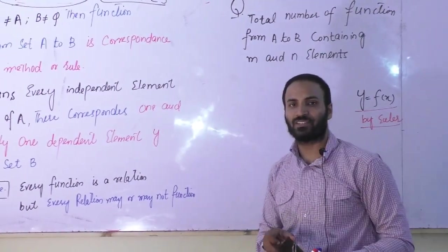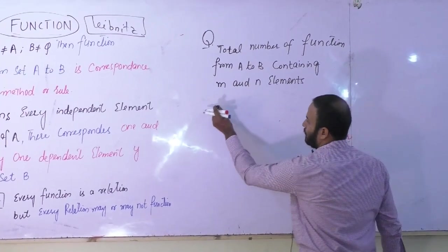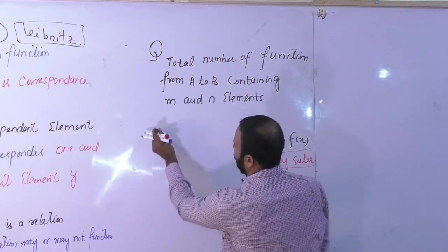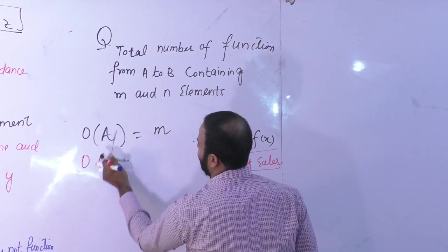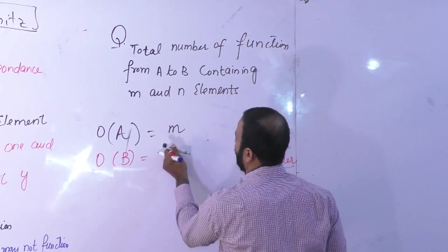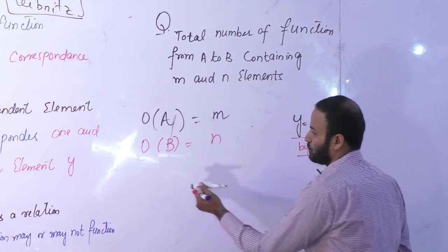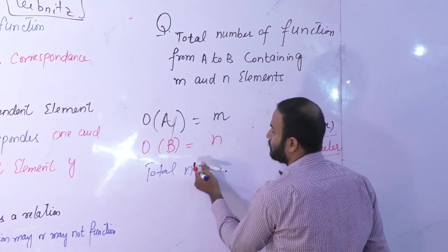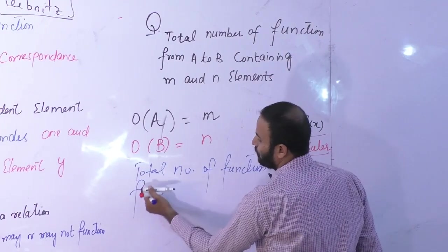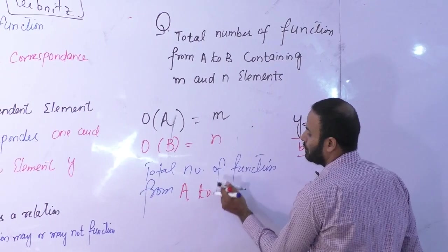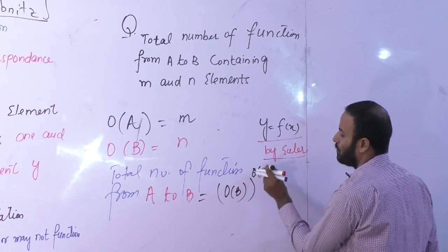Total number of functions, if we have set A with order m and set B with order n. So set A has m elements, set B has n elements. Total number of functions from A to B will be order of B raised to the power order of A, which is n to the power m.